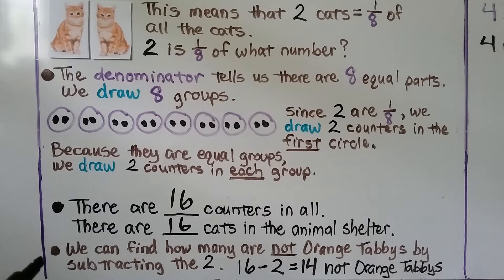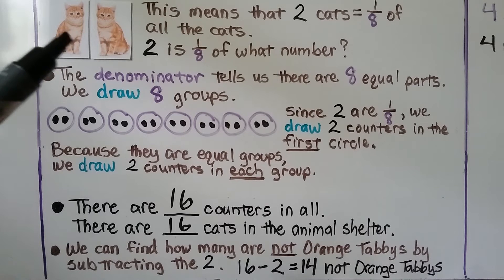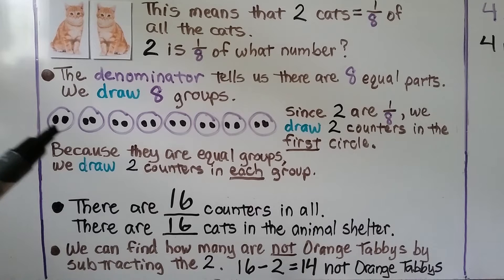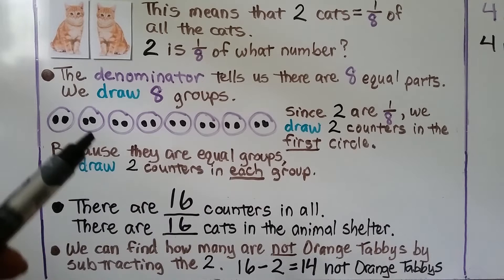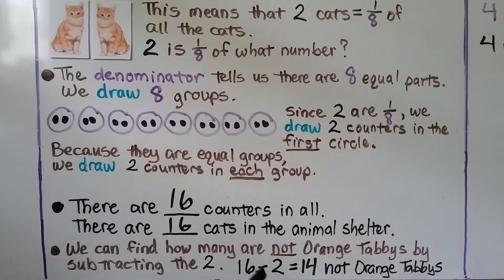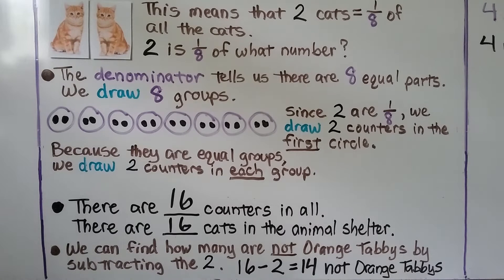We can find how many are not orange tabbies by subtracting the 2 that are. If these 2 are orange tabbies and the rest aren't, we can do 16 minus the 2 orange tabbies, which equals 14 that are not orange tabbies. So the shelter has 14 cats that are not orange tabbies.